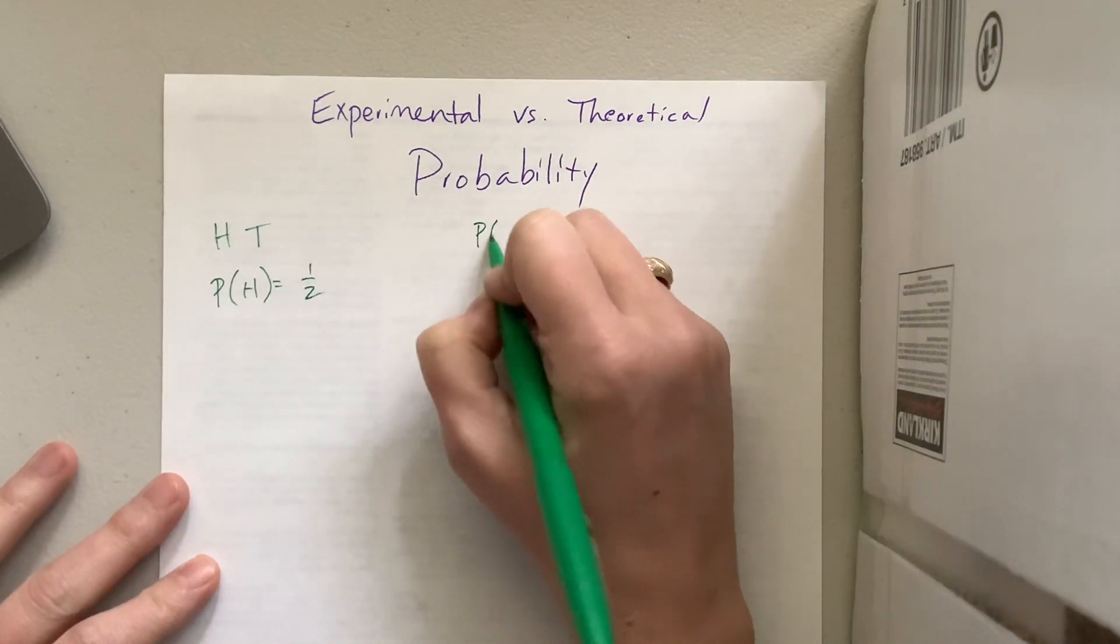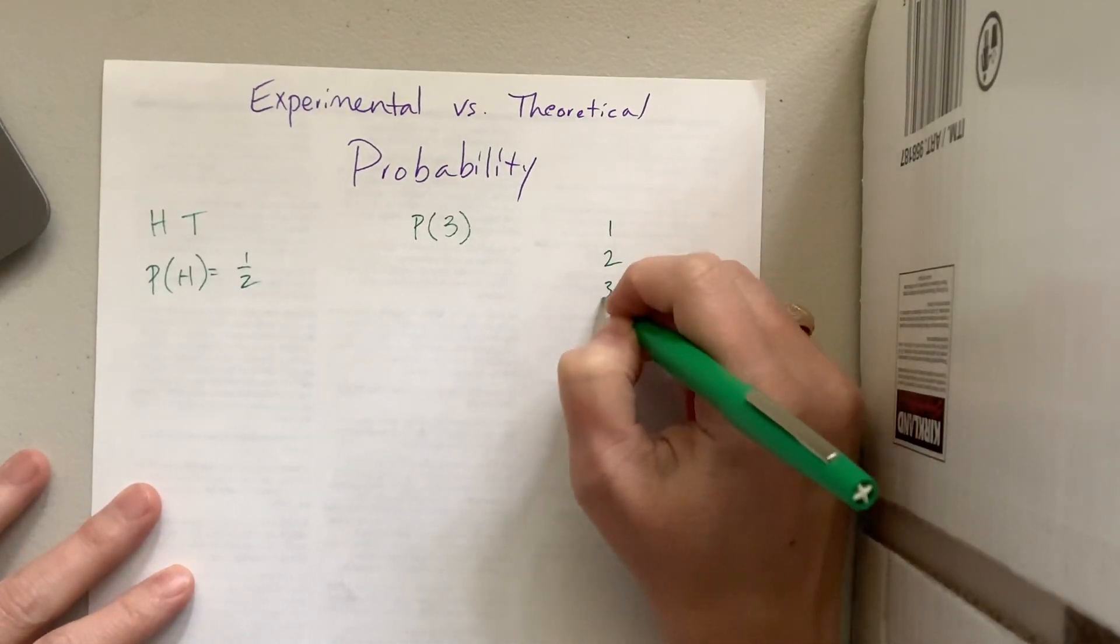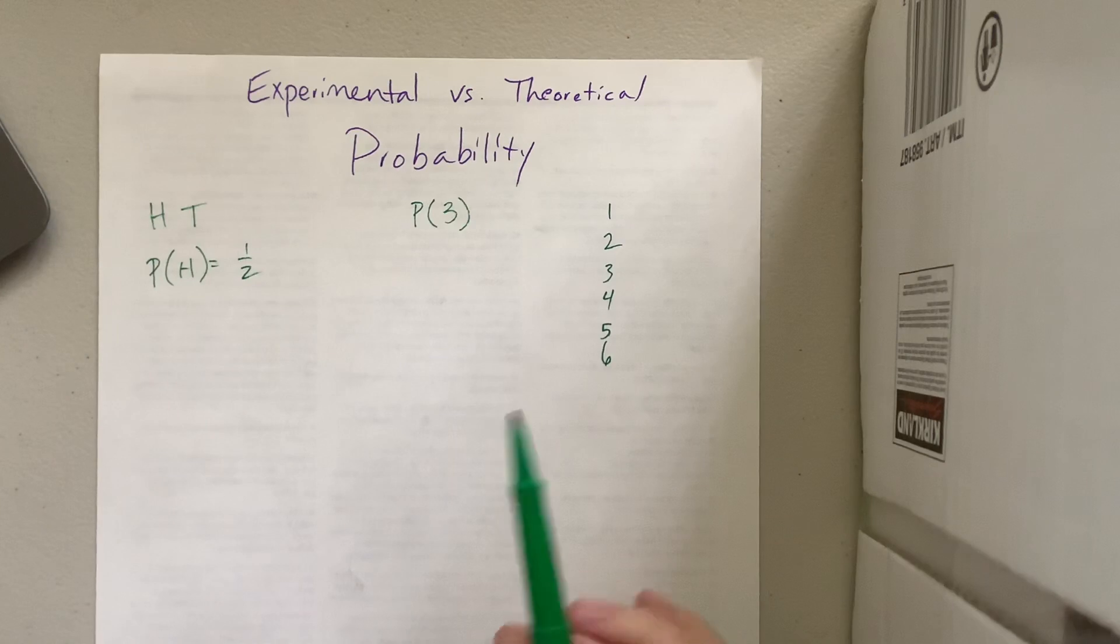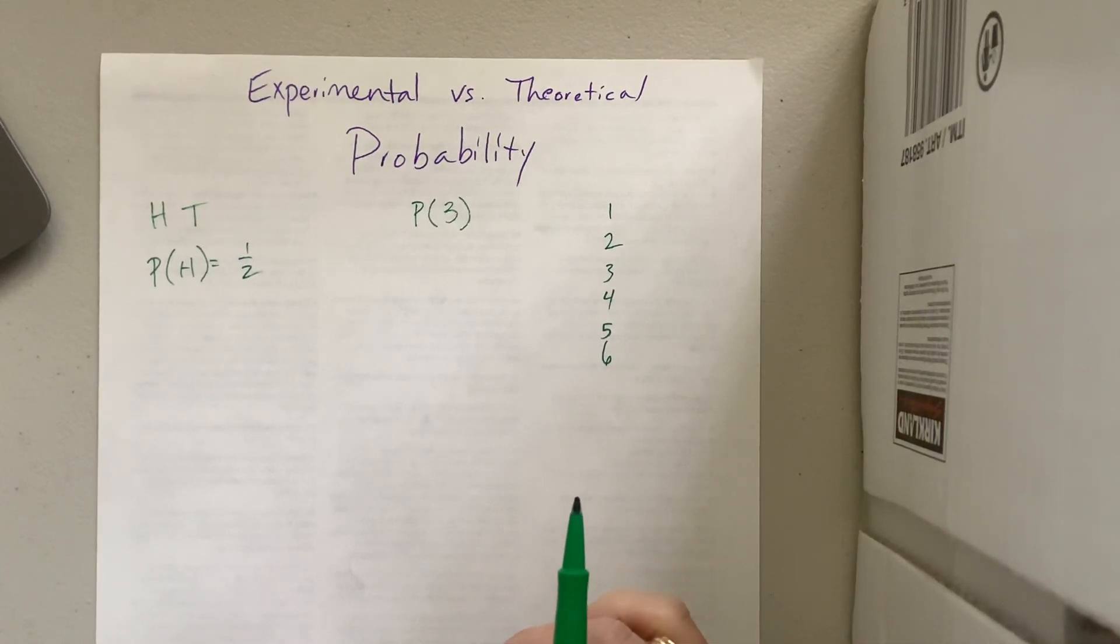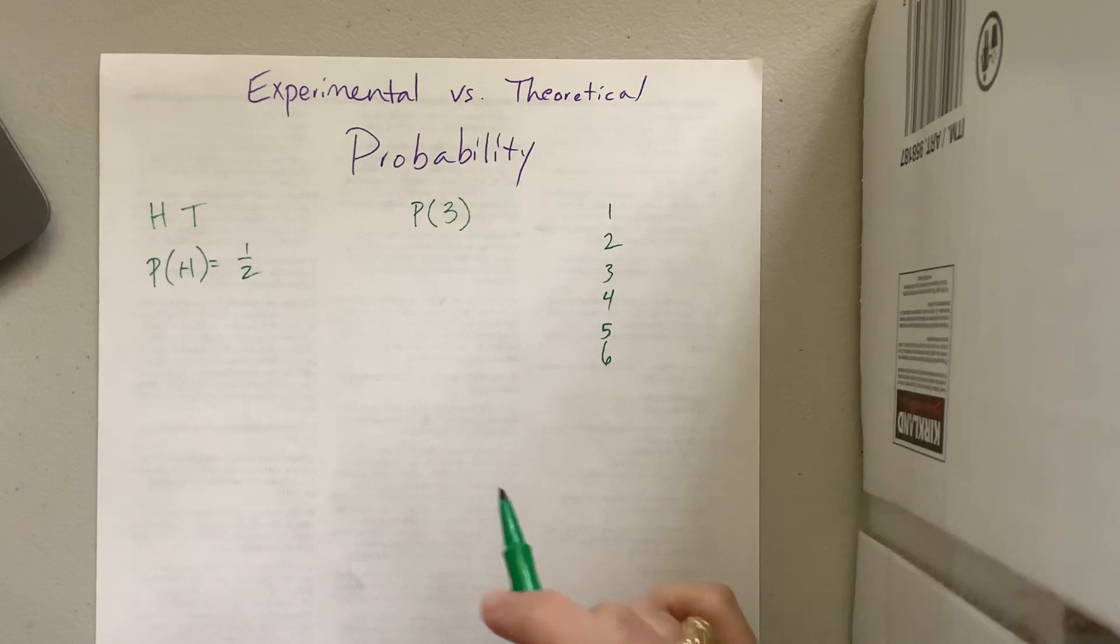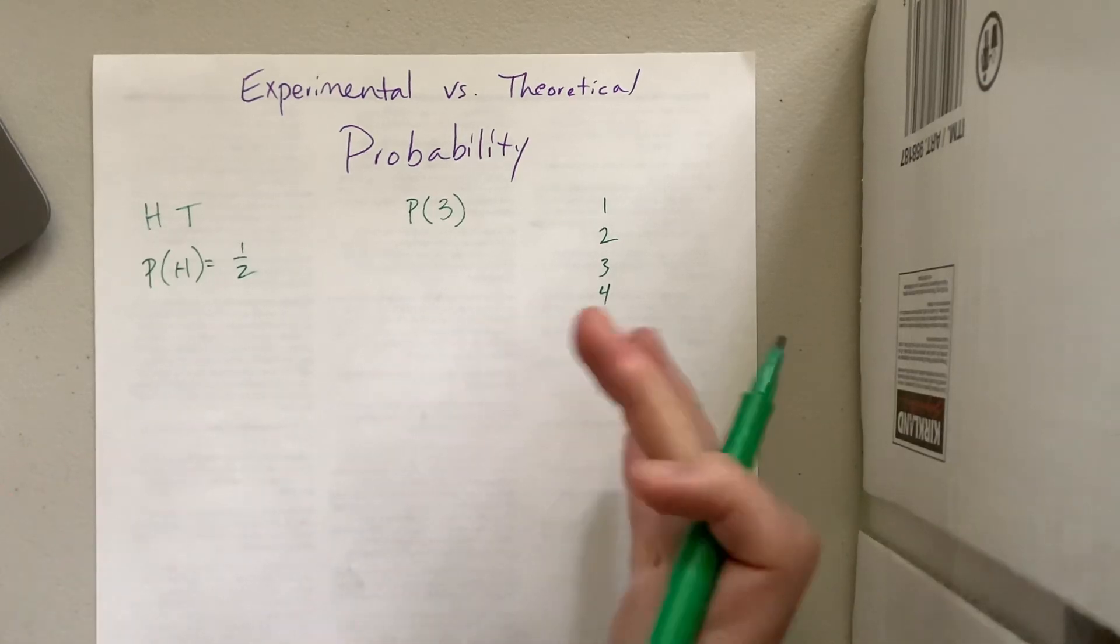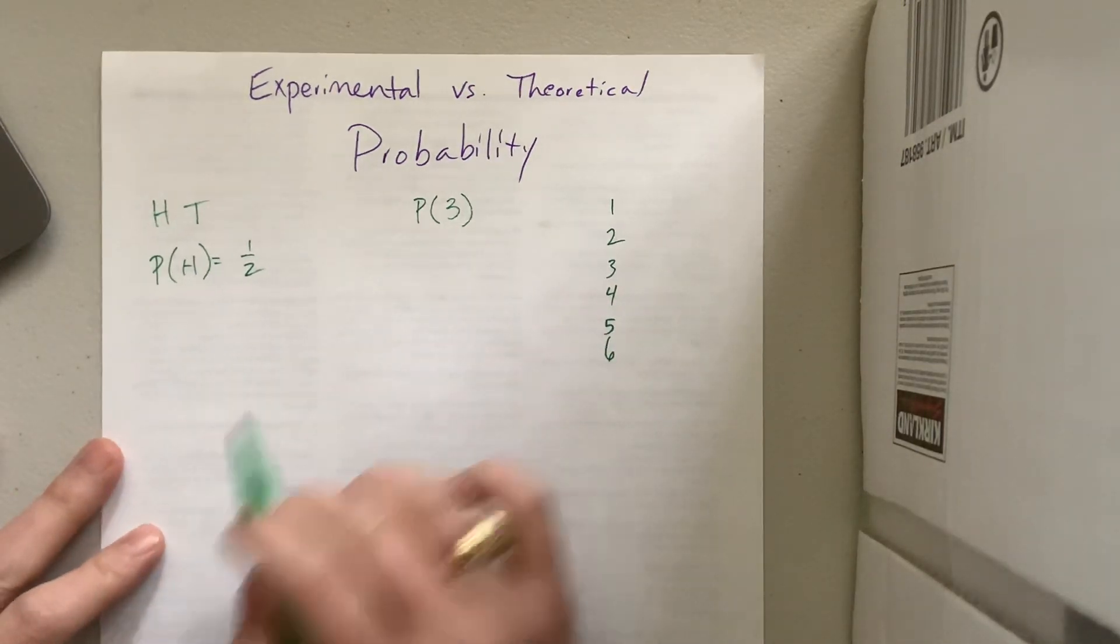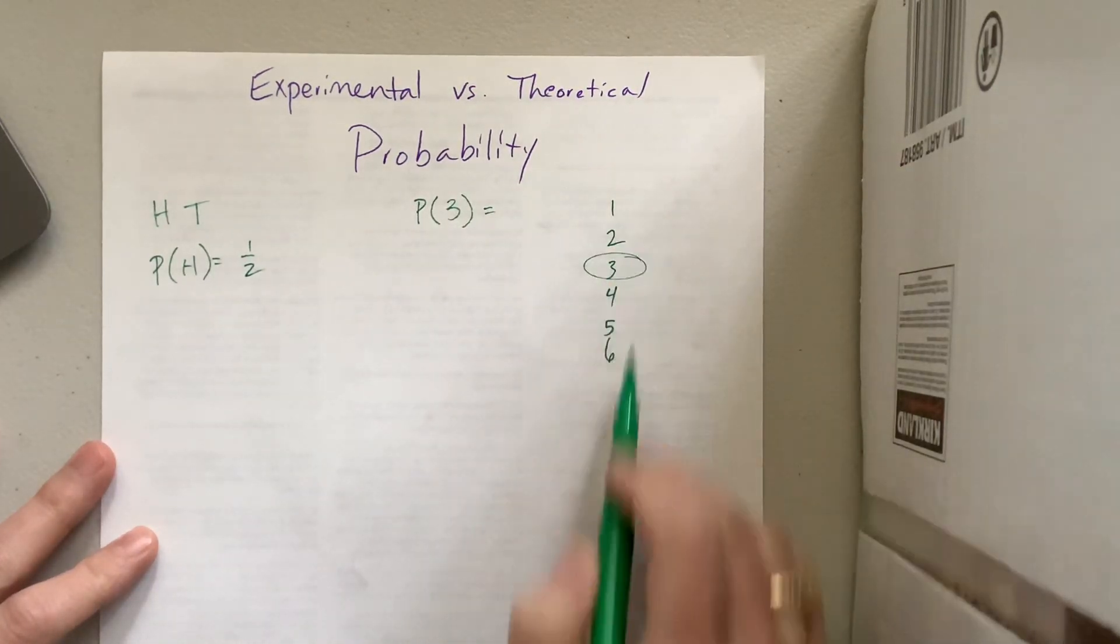If I say, what's the probability of rolling a dice and getting a three? Well, when you have a dice, you've got one, two, three, four, five, or six on the sides. When they just say the word dice or you roll a die, they're implying that it's a six-sided die and it's a fair die. If it's weighted or not just a regular die, they have to tell you. If all they do is say you roll a dice, you can assume that it's fair and it's got the numbers one through six.